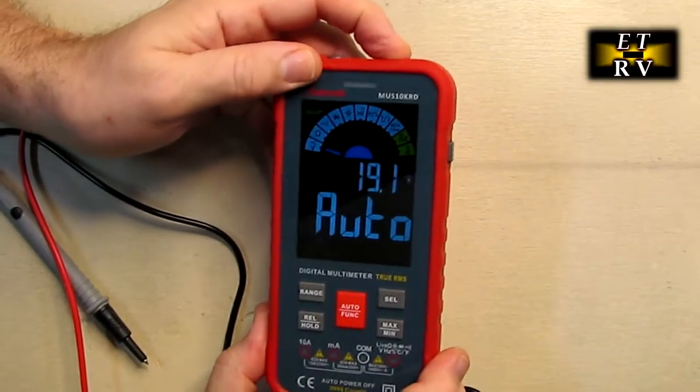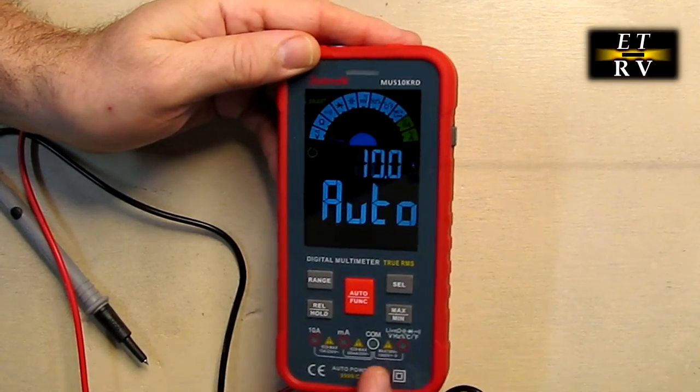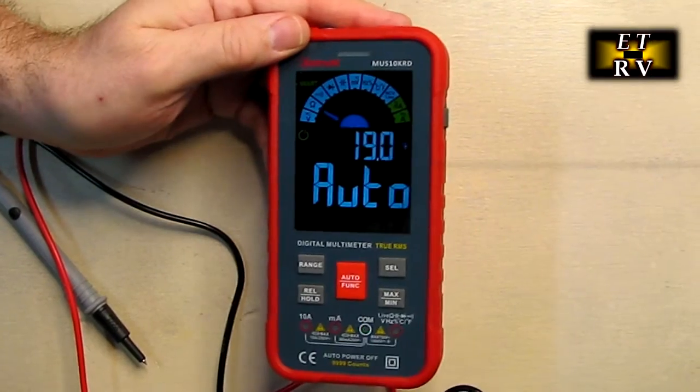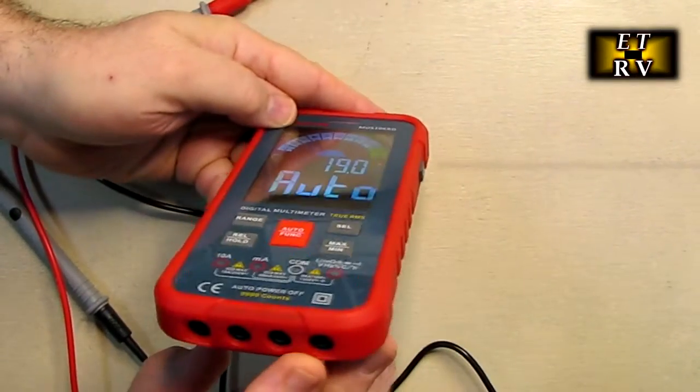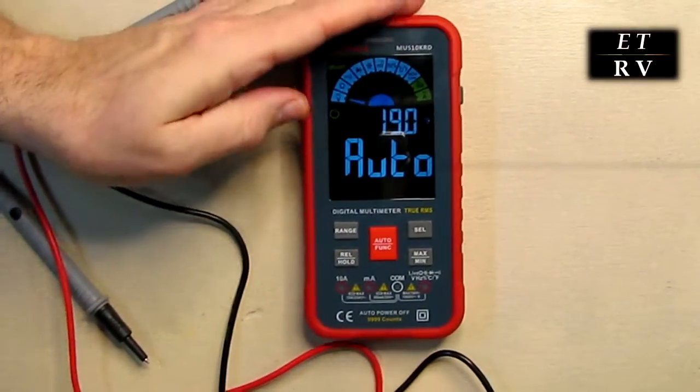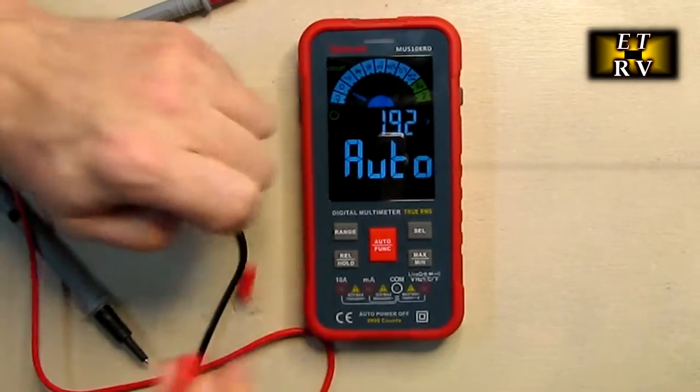Now when you first turn this on—let's turn it off again—you notice there's two LEDs are blinking right there. It's telling you to put test leads into those two positions right there, and we're going to do that.